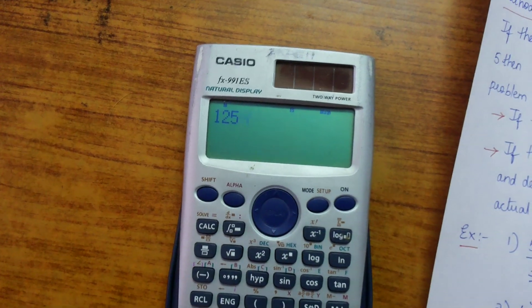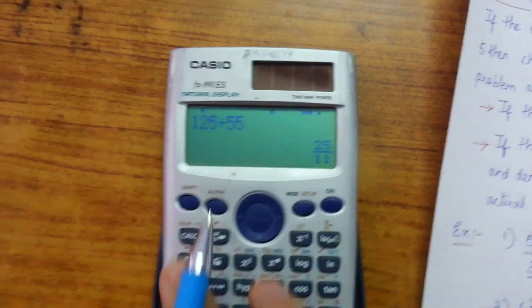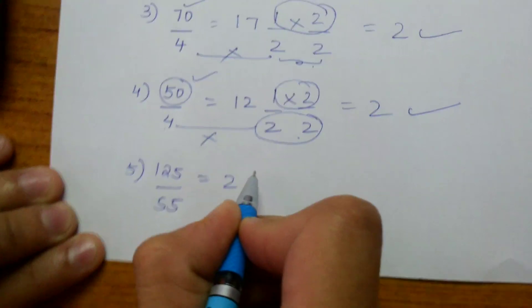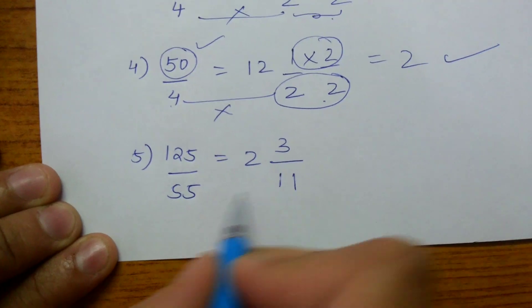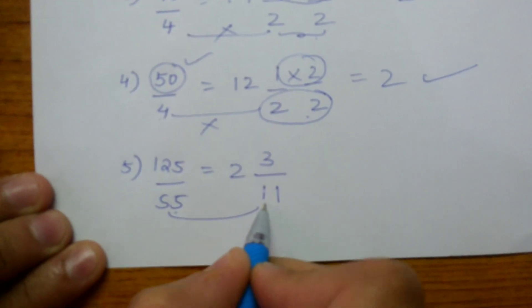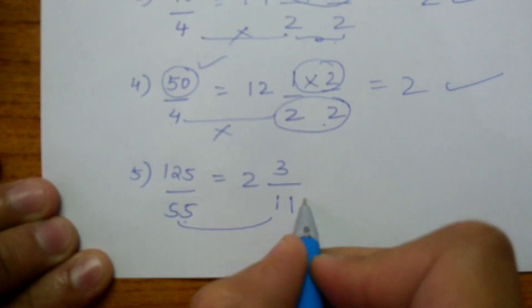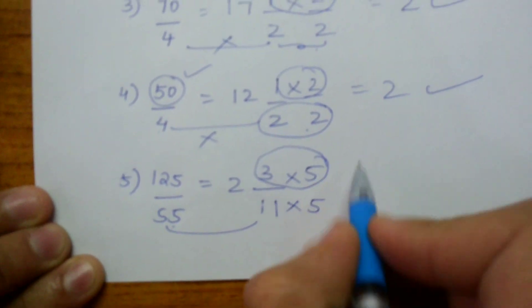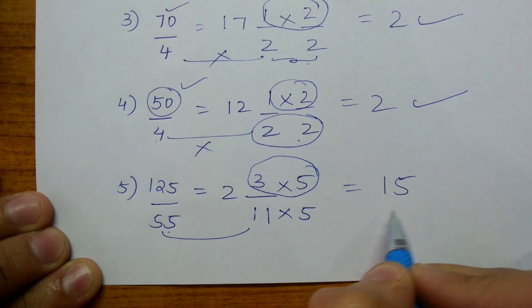So now let us check for last problem, 125 divided by 55. We are getting 2, 3 by 11. But here the denominator is 55 and here the denominator is 11. So in order to make it 55, I am going to multiply it with 5 on both sides. And hence the remainder I get is 15, which is correct.